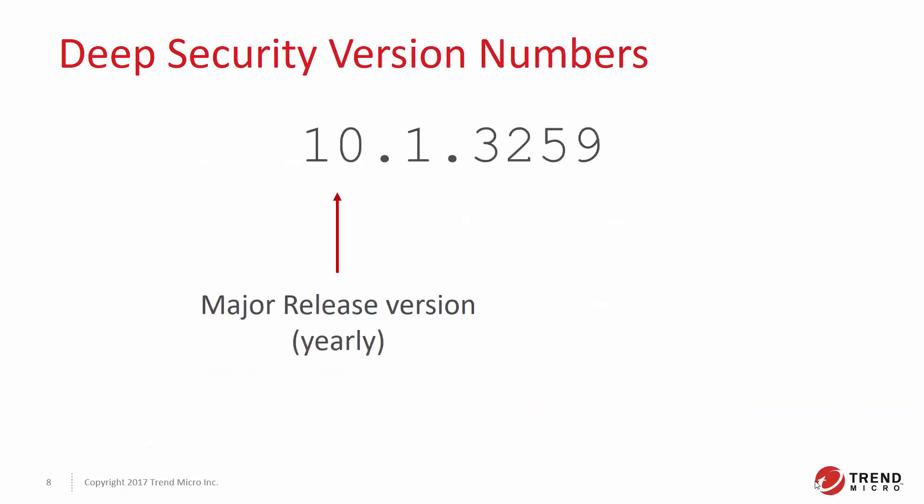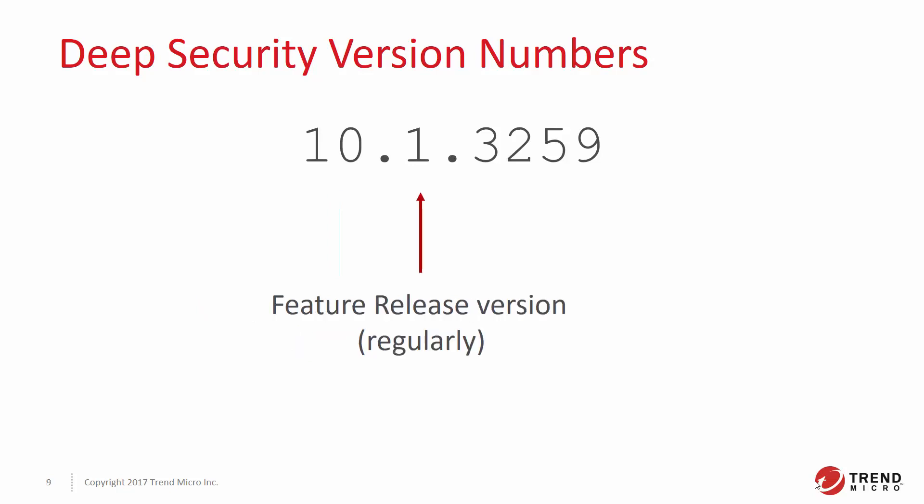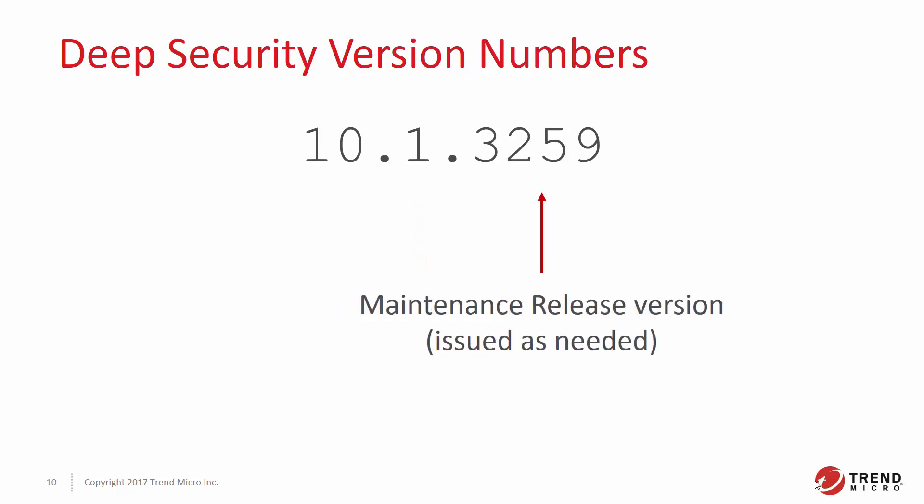You can easily distinguish between major releases and feature releases by the version number. Major releases use the following versioning pattern. Version 10.0 is the GM release version number. The .1 is the feature release version, and these will be released regularly during the product's lifecycle. Finally, the maintenance release version will be released as needed during the product lifecycle.